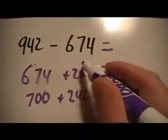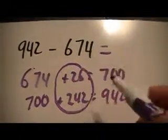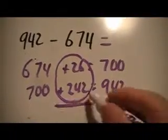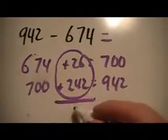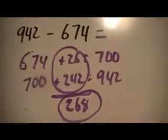And so now, here's the difference. They're just going to add up those numbers that they added from 674 to 942, and they're going to get their answer of 268.